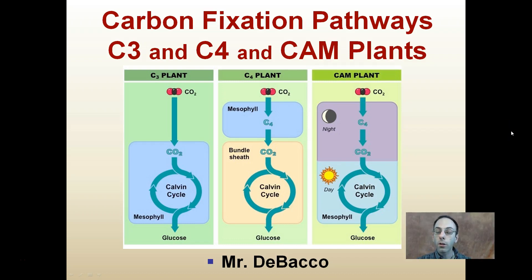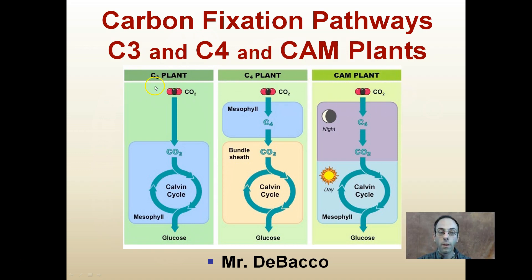Here we're going to look at different carbon fixation pathways for what's called C3, C4, and CAM plants. Please realize each uses carbon dioxide, and ultimately all three of these produce glucose. It's how they go about doing this that's different.